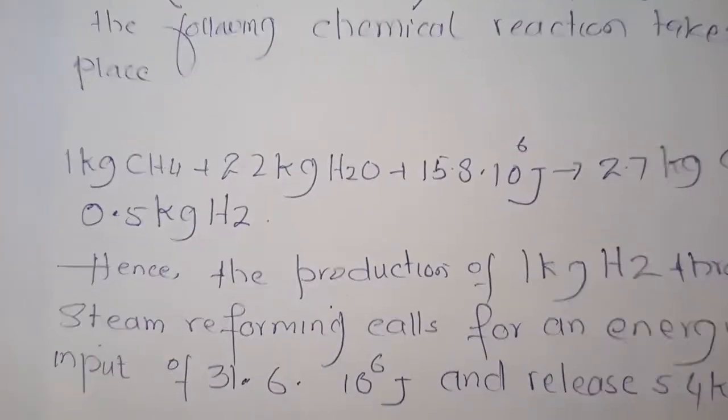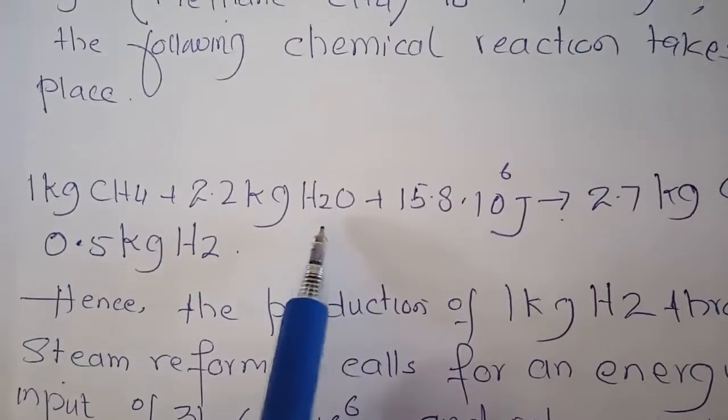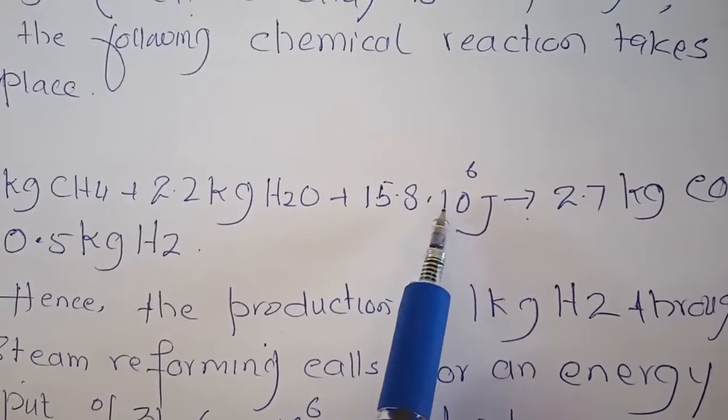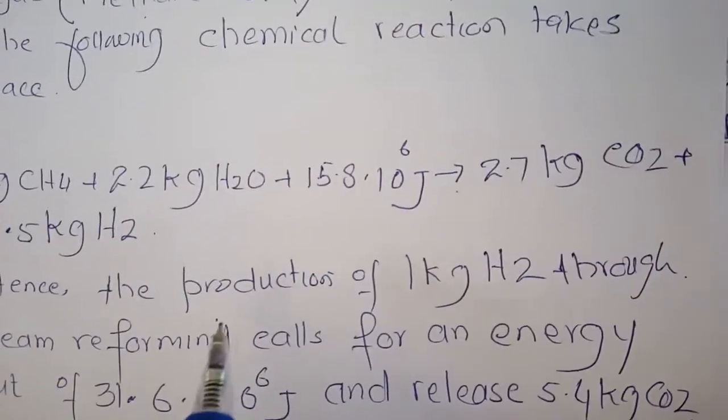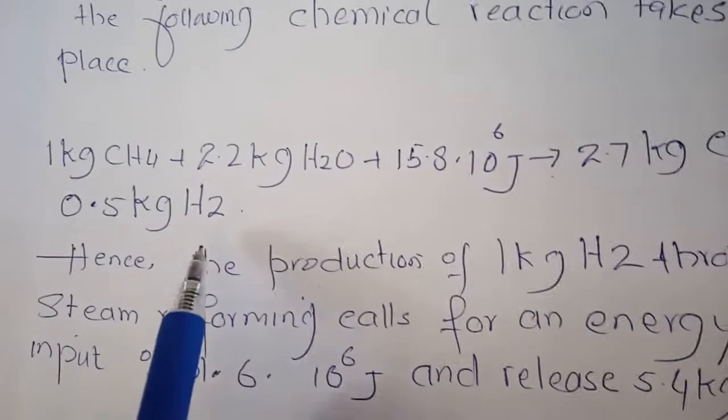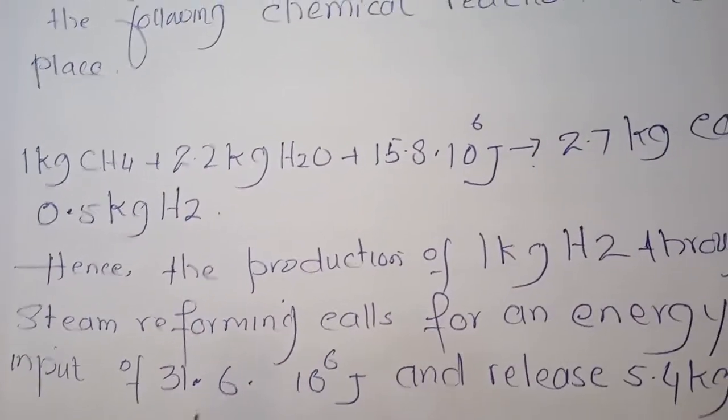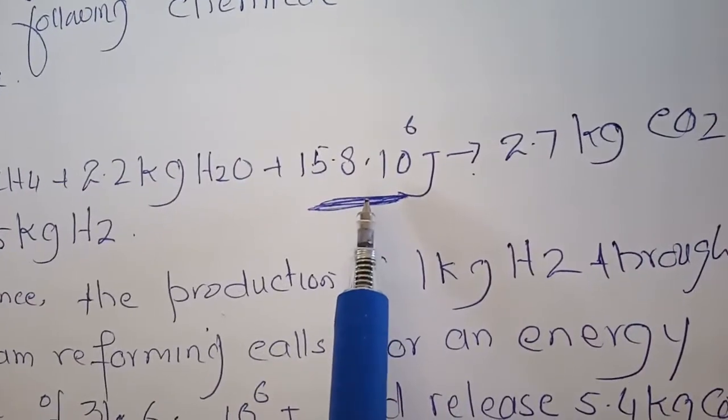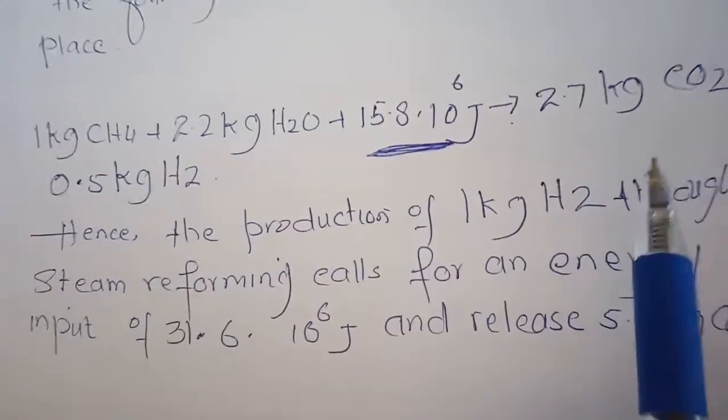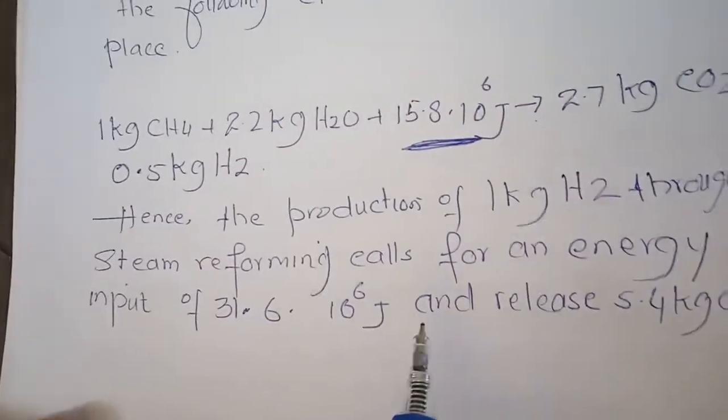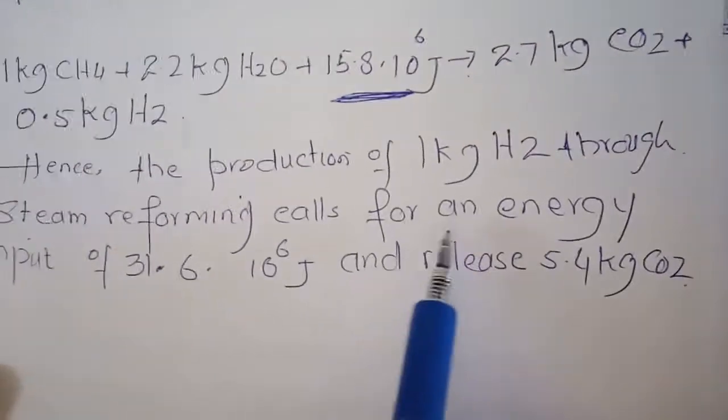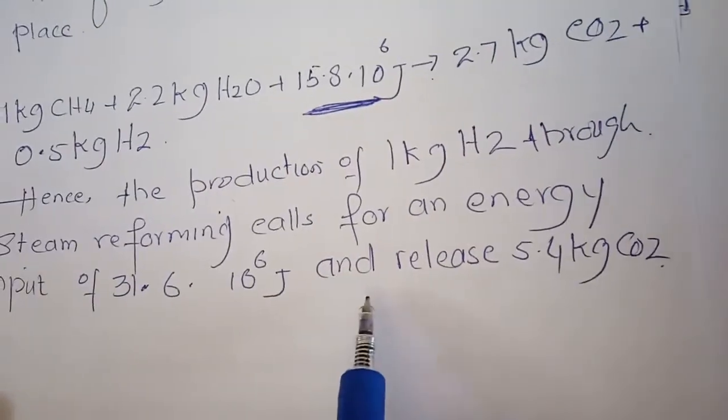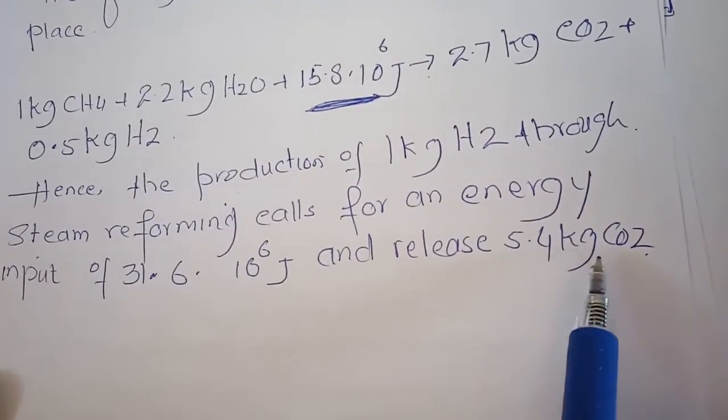1 kg methane plus 2.3 kg of water plus 115.8 times 10 to the power 6 joules gives 2.7 kg carbon dioxide plus 0.5 kg hydrogen. Here we add a quantity of energy in order to get specific amounts of carbon dioxide and hydrogen. Hence, the production of 1 kg hydrogen through steam reforming calls for an energy input of 31.6 times 10 to the power 6 joules and release of 5.4 kg carbon dioxide. Thank you very much.